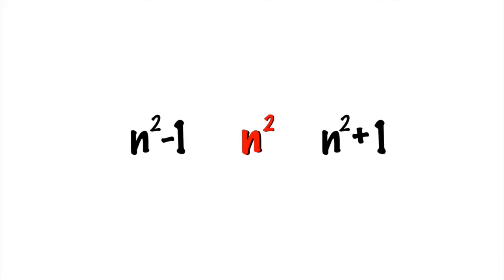So let's take a look at this sequence. What happens if n is a multiple of three? If n is divisible by three, then we can clearly see that n squared is going to be divisible by three as well. If n squared is divisible by three, then neither of these guys are divisible by three. That part is pretty obvious.